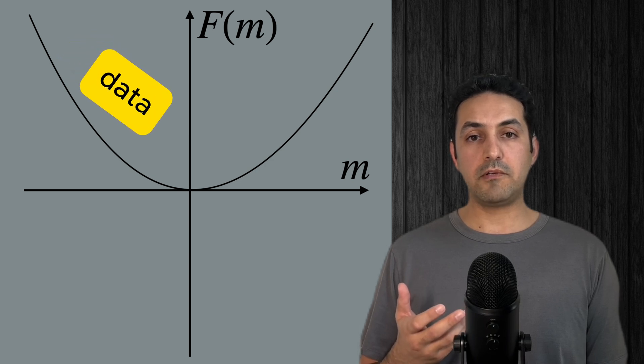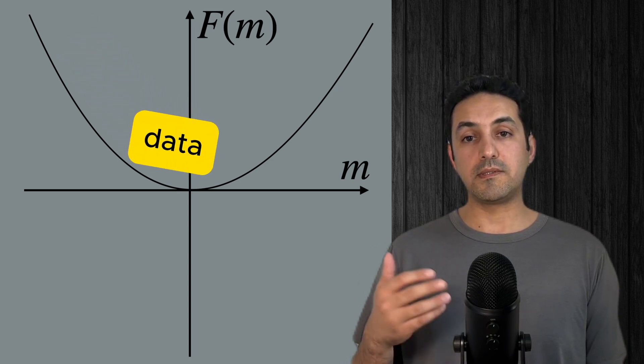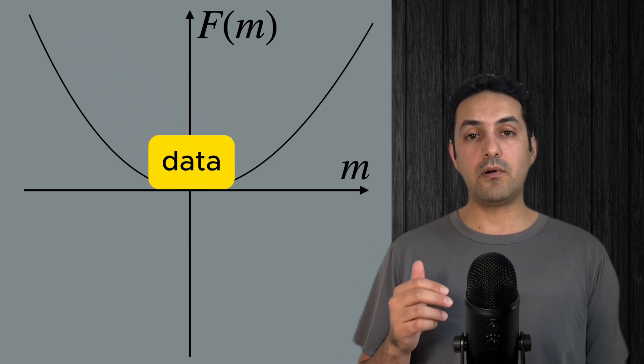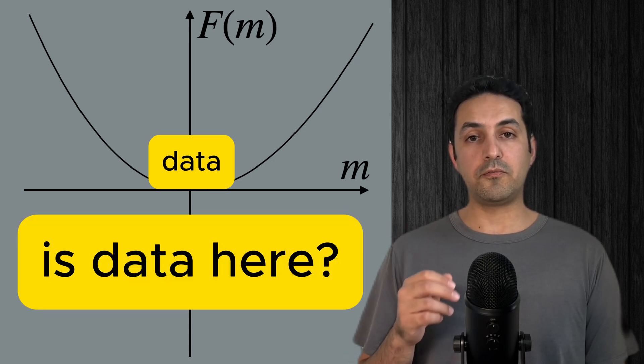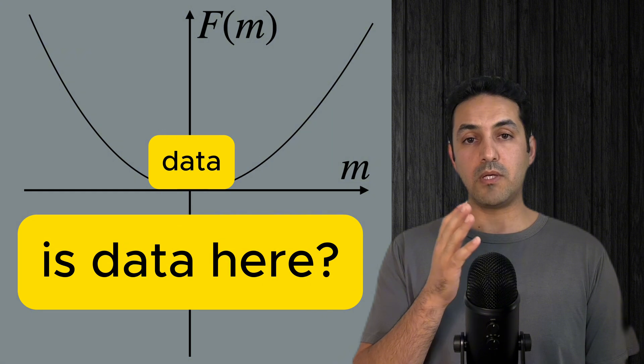Therefore, the system we are observing and collecting data from is stable only if it is already at the minimum of this free energy. That means our goal is to find out if the system is at minimum or not.